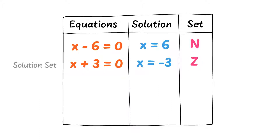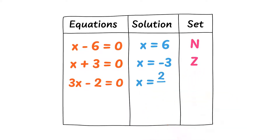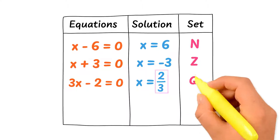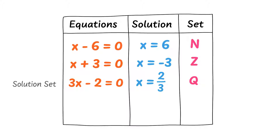Thirdly, consider 3x minus 2 is equal to 0. We know that the solution of this equation is x is equal to 2 divided by 3. 2 divided by 3 is a rational number, or it belongs to the set Q. The solution of this equation lies in the set of rational numbers or real numbers.